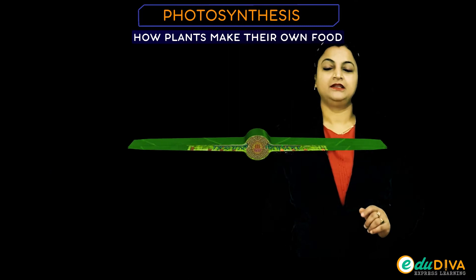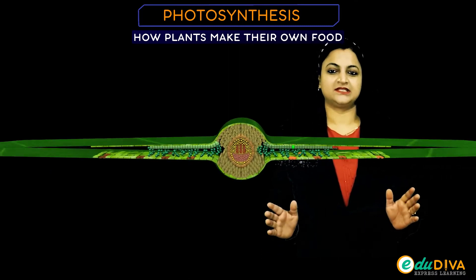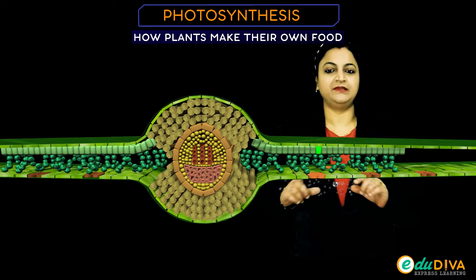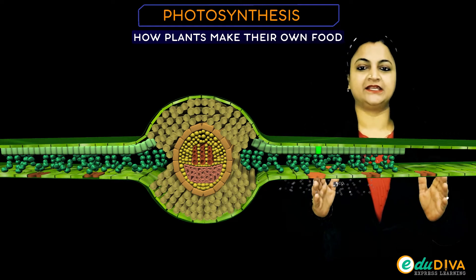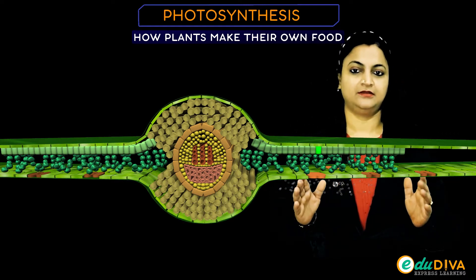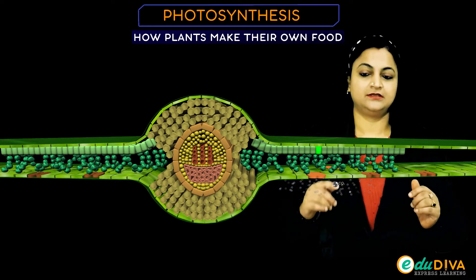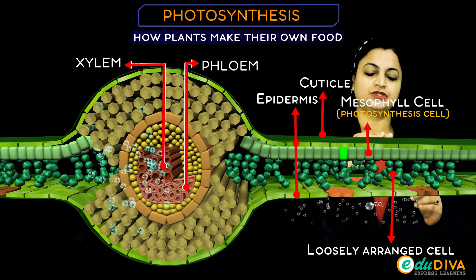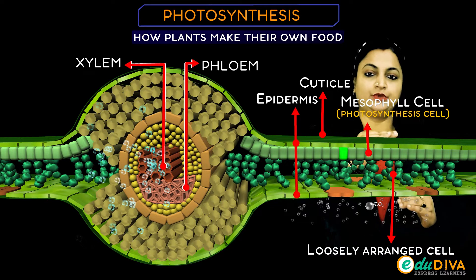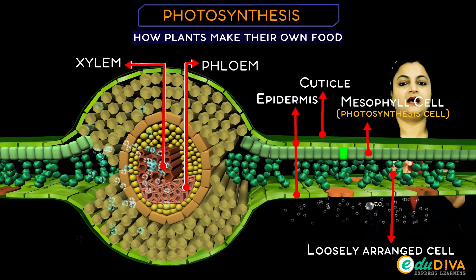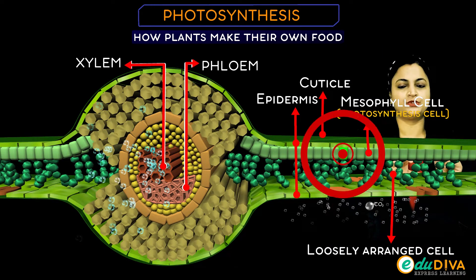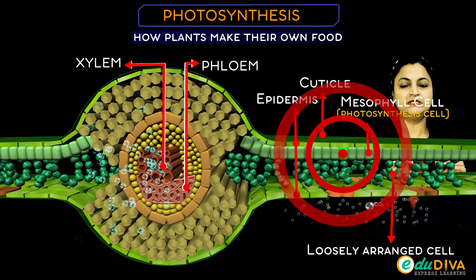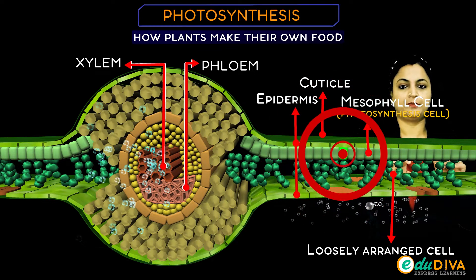Now, a leaf in cross-section — when you cut the leaf and view it under a microscope, what will you get? The first and last layer is the cuticle. Under the cuticle is the upper epidermis, then the lower epidermis. You will see small cells, and in those cells you will see chloroplast.